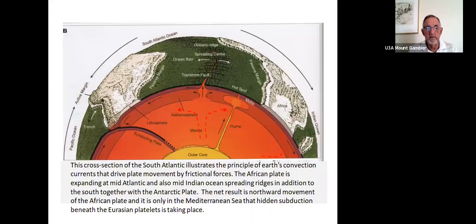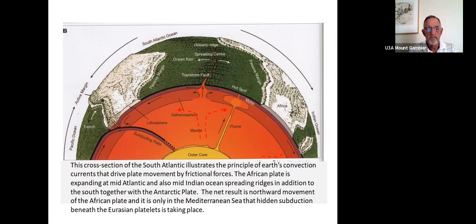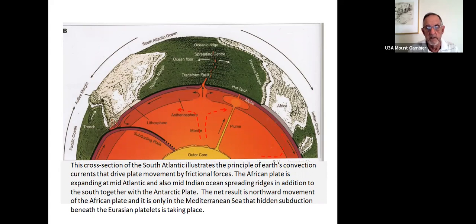This cross-section of the South Atlantic illustrates the principle of Earth's convection currents that drive the plate movement by frictional forces. The African plate is expanding at mid-Atlantic, as is the South American plate, and also at the mid-Indian Ocean, with oceanic crust being added to the African plate. The net result is northward movement of the African plate. It's only in the Mediterranean Sea that hidden subduction of plates related to the Eurasian plate is taking place.